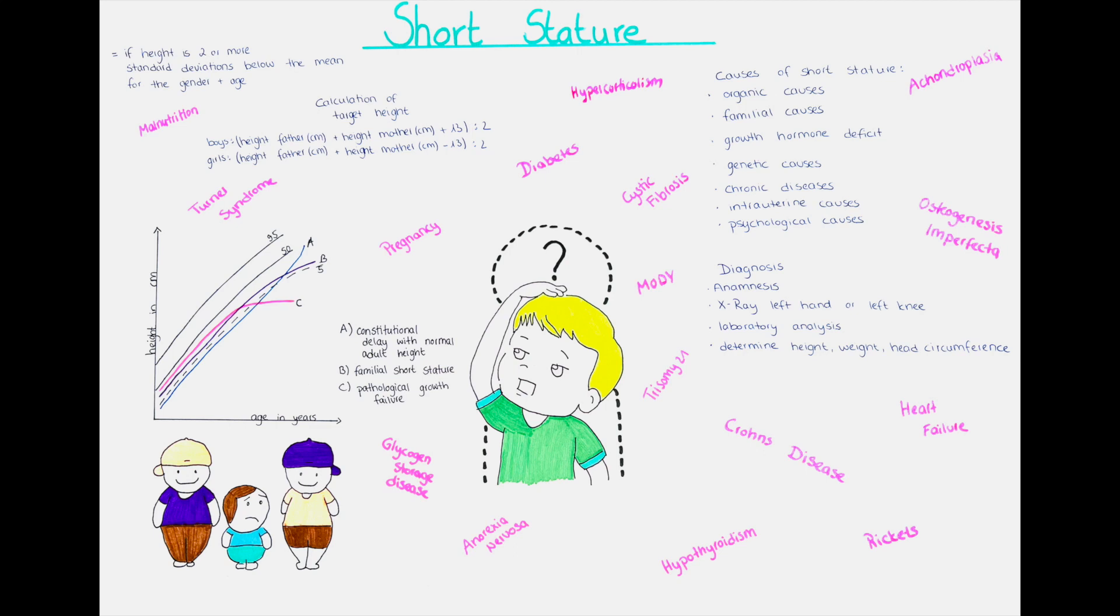So first of all, what is short stature? When a child is considered to be of short stature, it means that its height is two standard deviations or more below the mean height for children of that gender and age. In other words, it means that 95 to 97% of the other boys or girls of the child's age will be taller than the child.